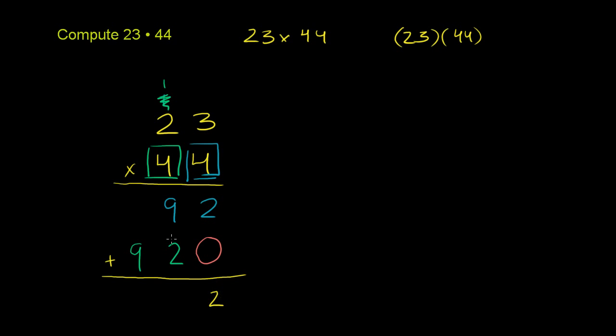2 plus 0 is 2. 9 plus 2 is 11, carry the 1. 1 plus 9 is 10. Put a comma here just so it's easy to read, every third digit. So 23 times 44 is 1,012.